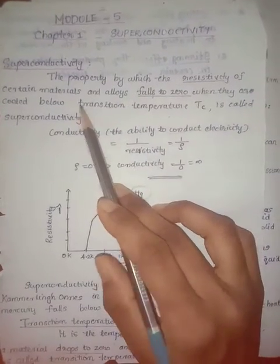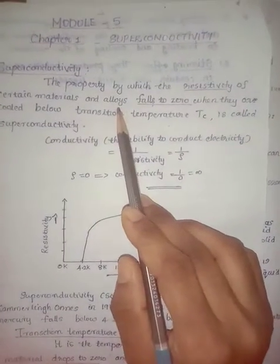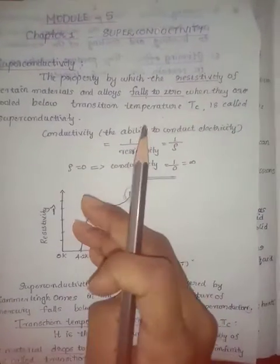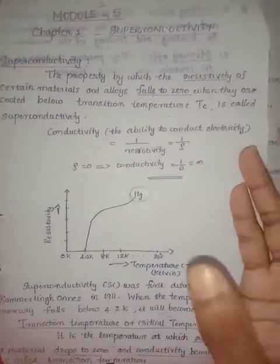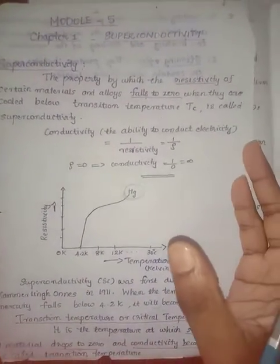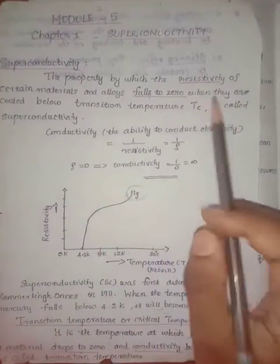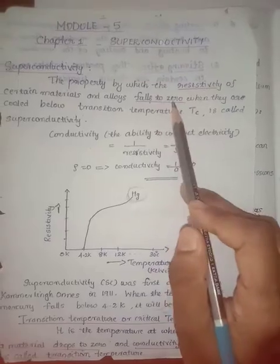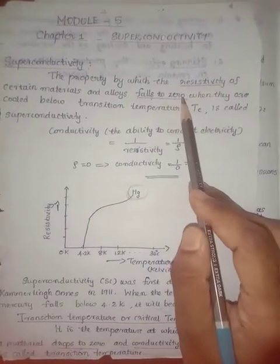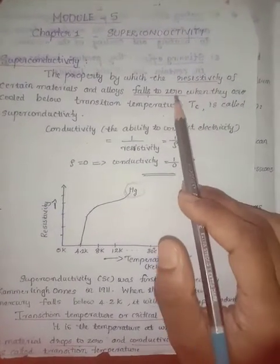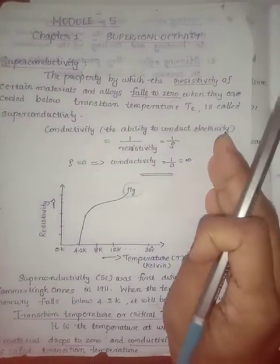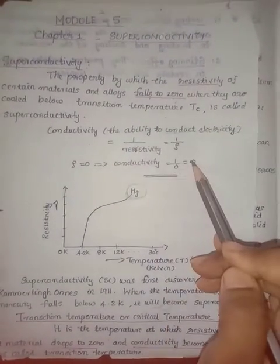Suppose we are reducing the temperature of metals and alloys below a particular temperature. At a certain moment, the resistivity of this material becomes zero. Because there is no restriction to the flow of current.